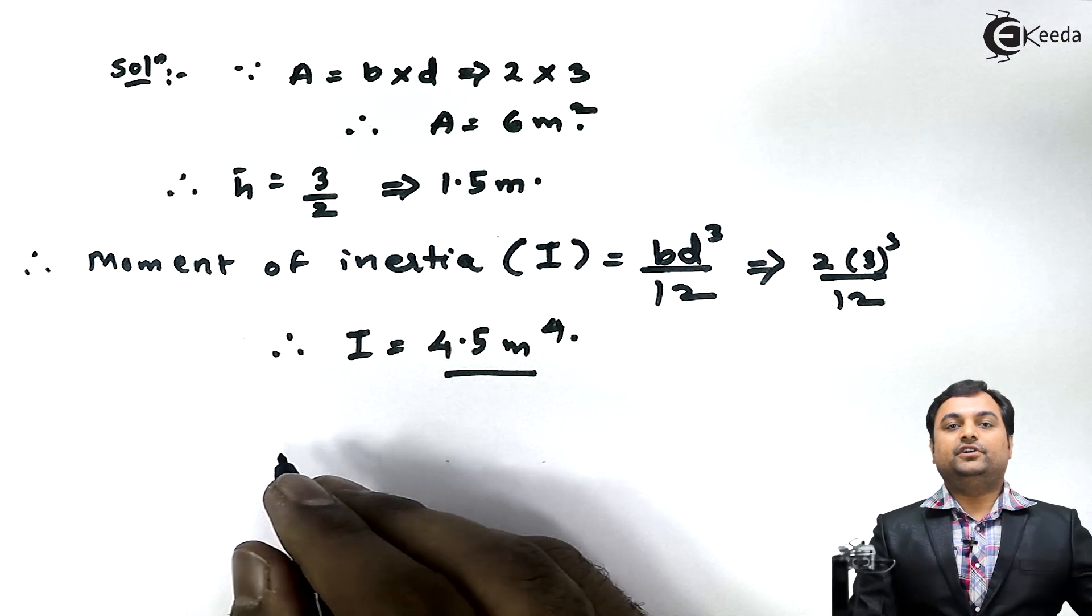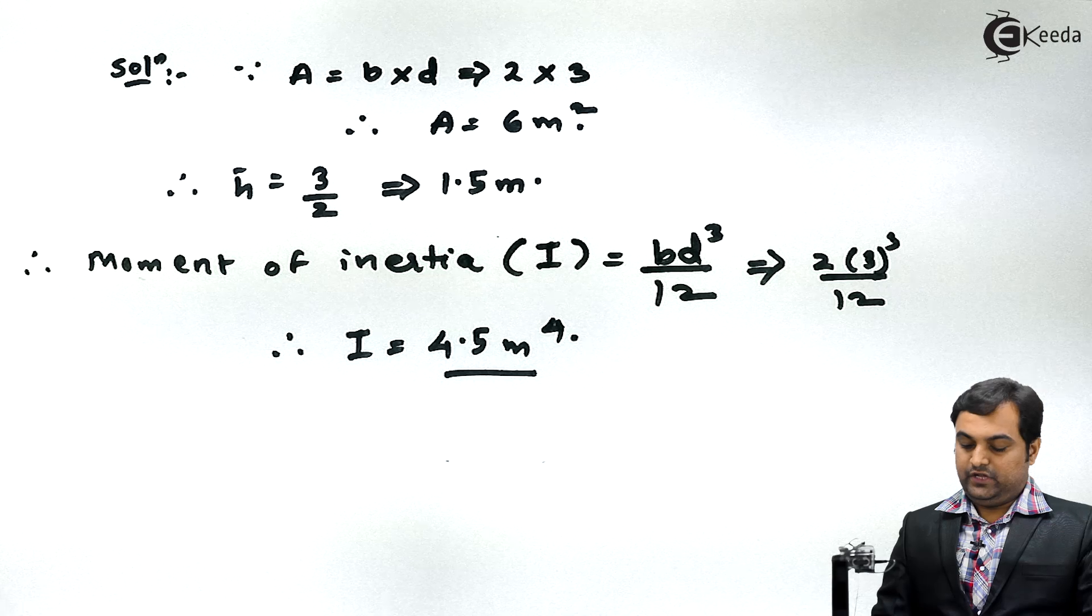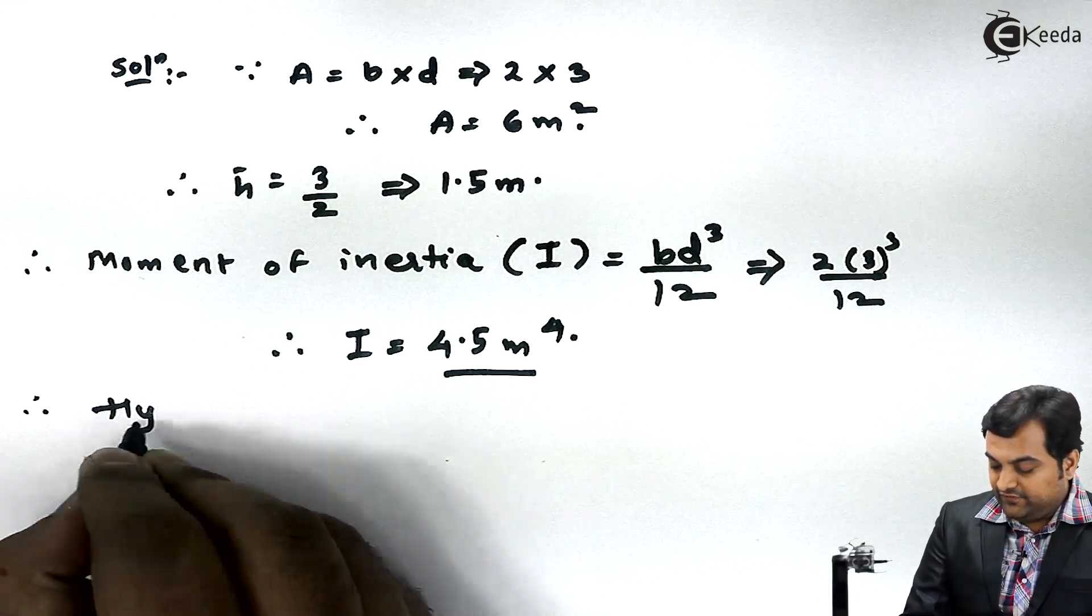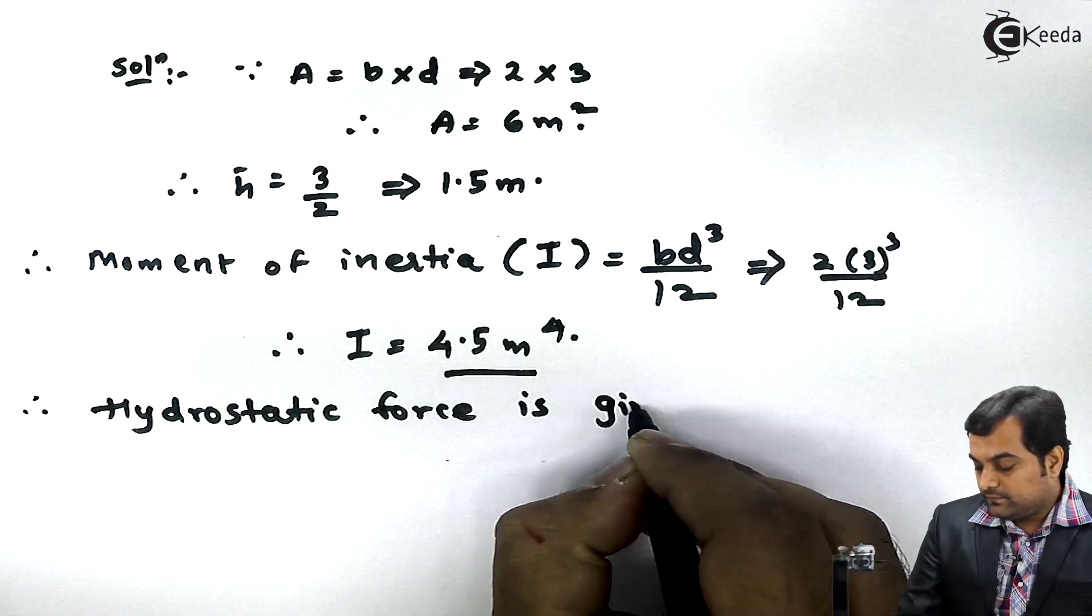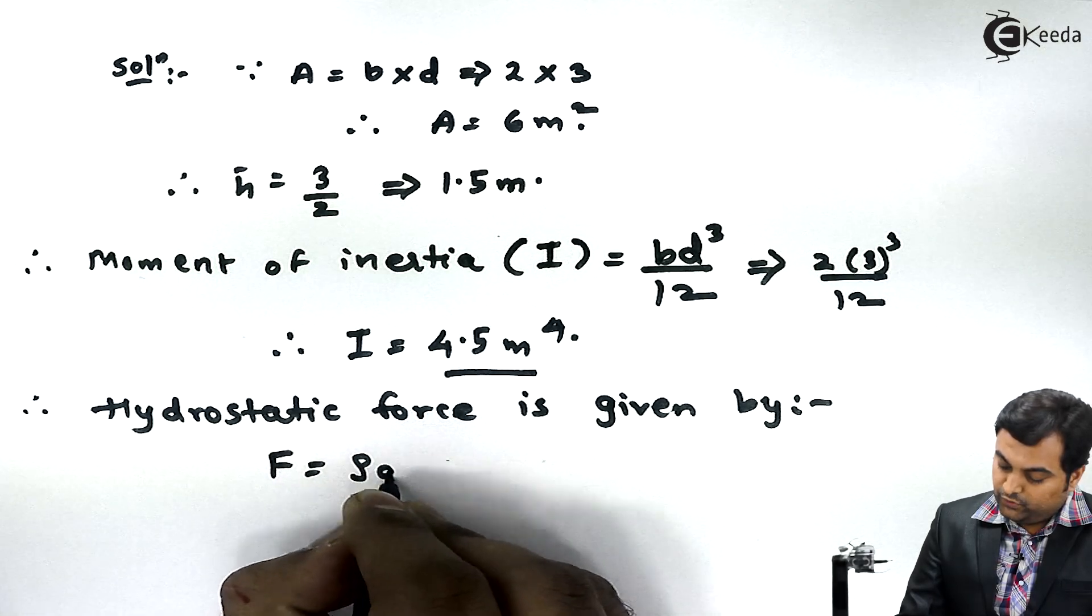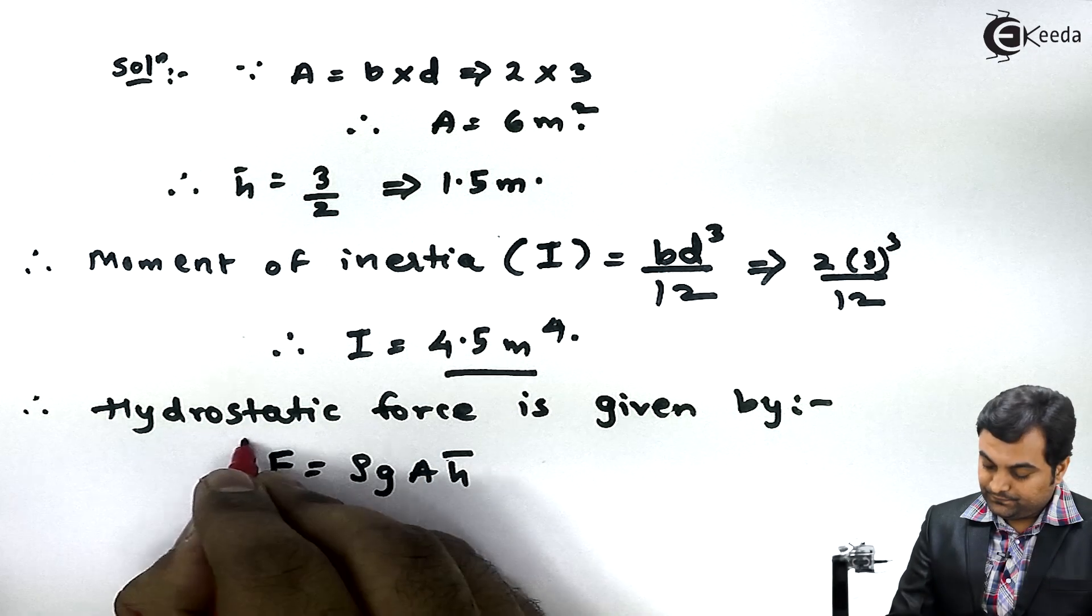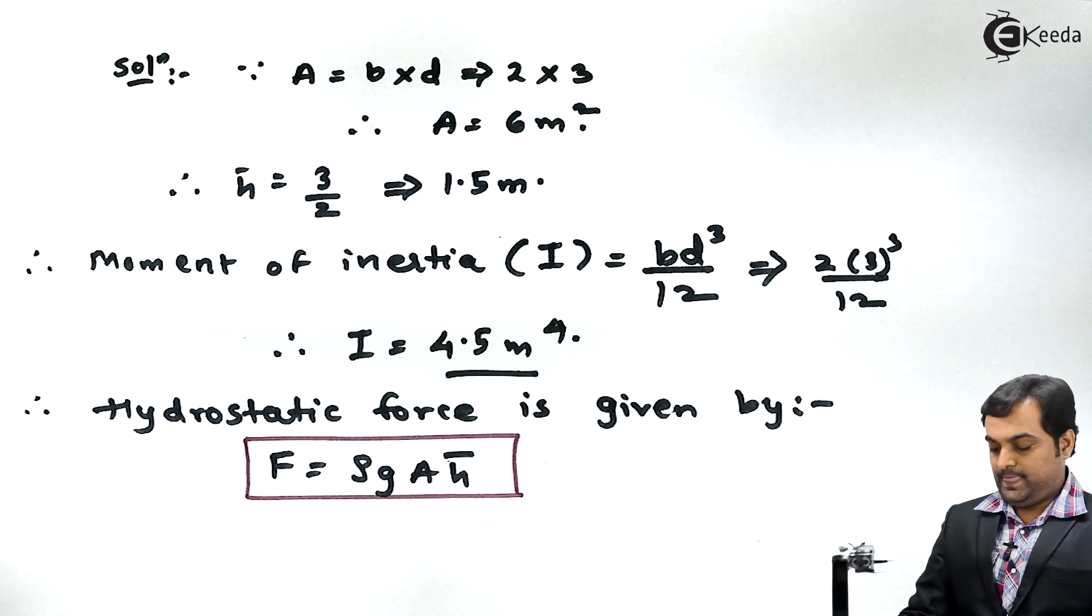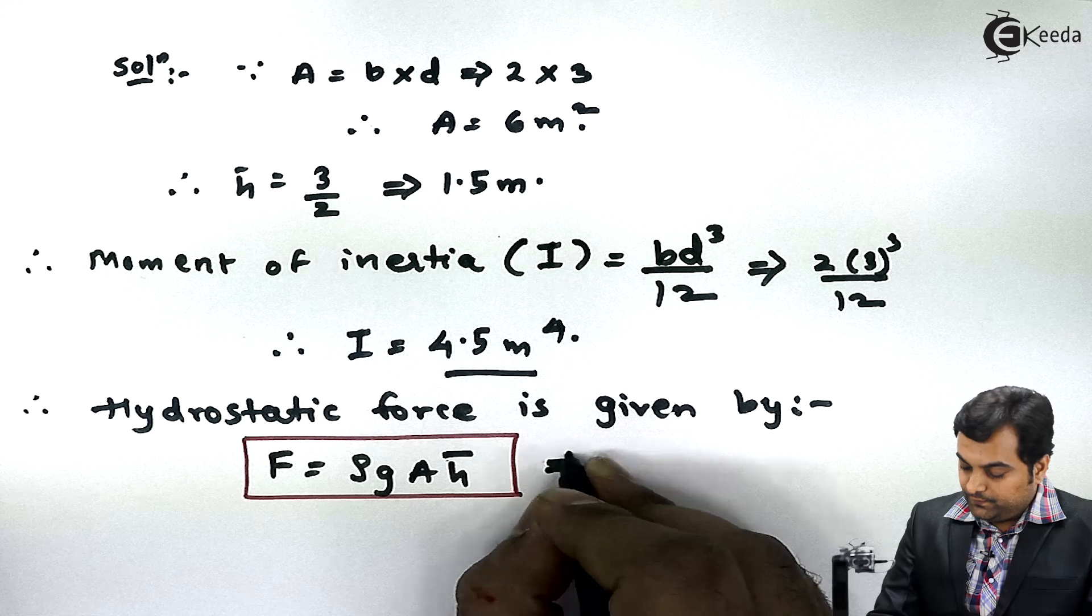Why we have calculated moment of inertia? Because it would be used in the formulas. Now therefore hydrostatic force is given by the formula: capital F is equal to rho G A into H bar. The formula of hydrostatic force. Now here this will be equal to rho